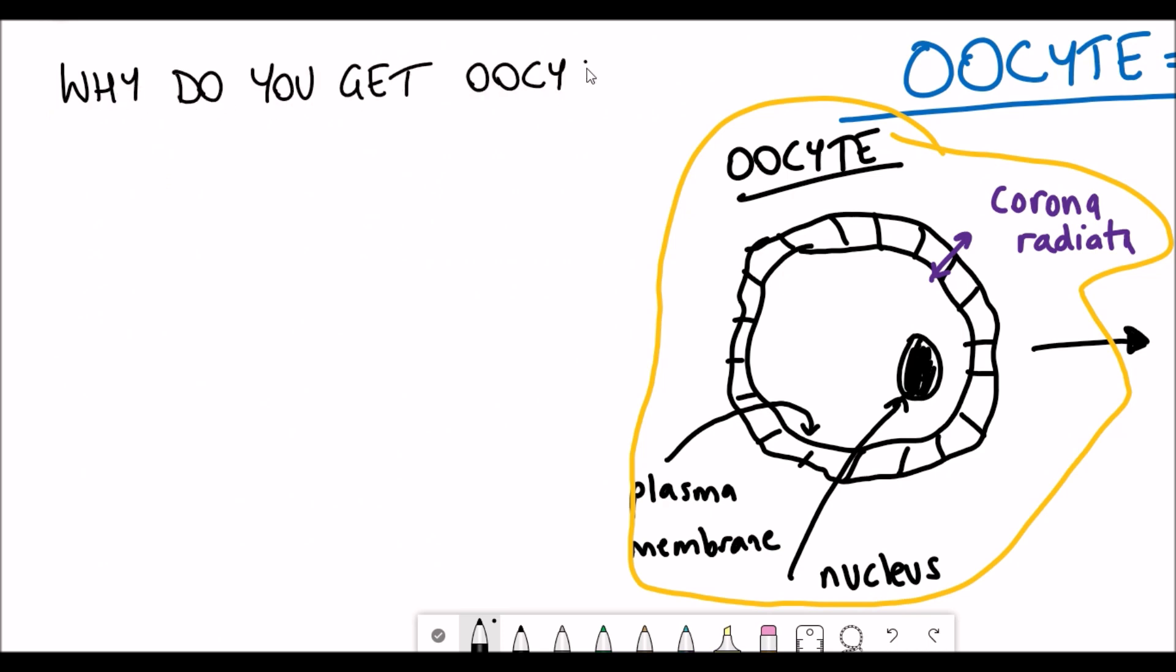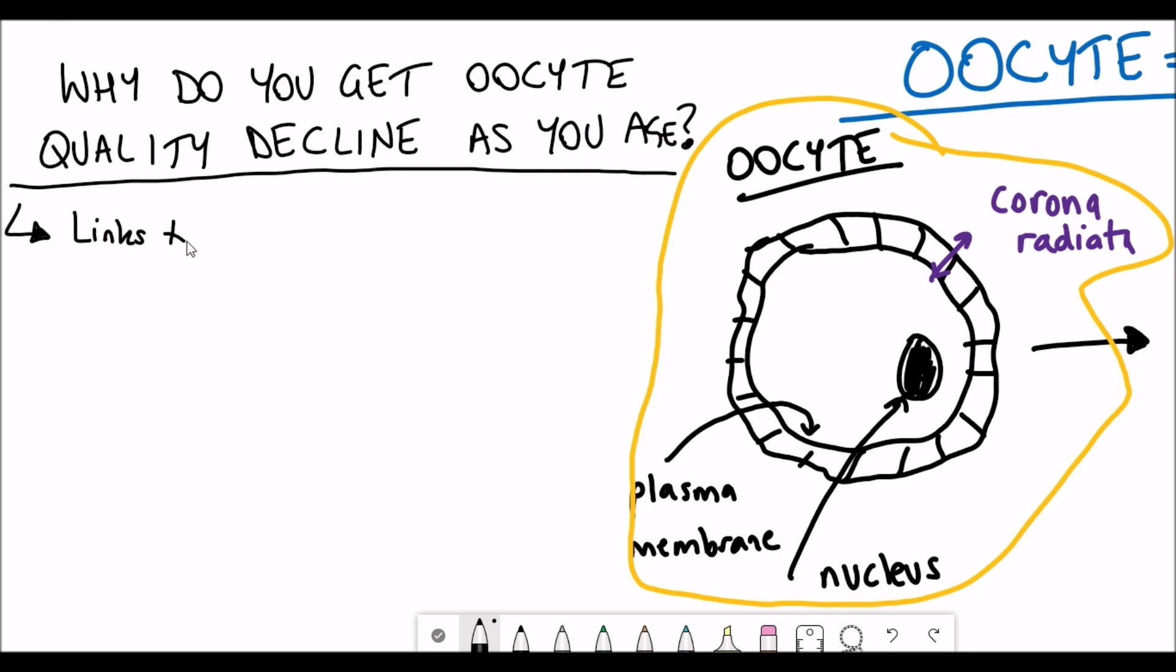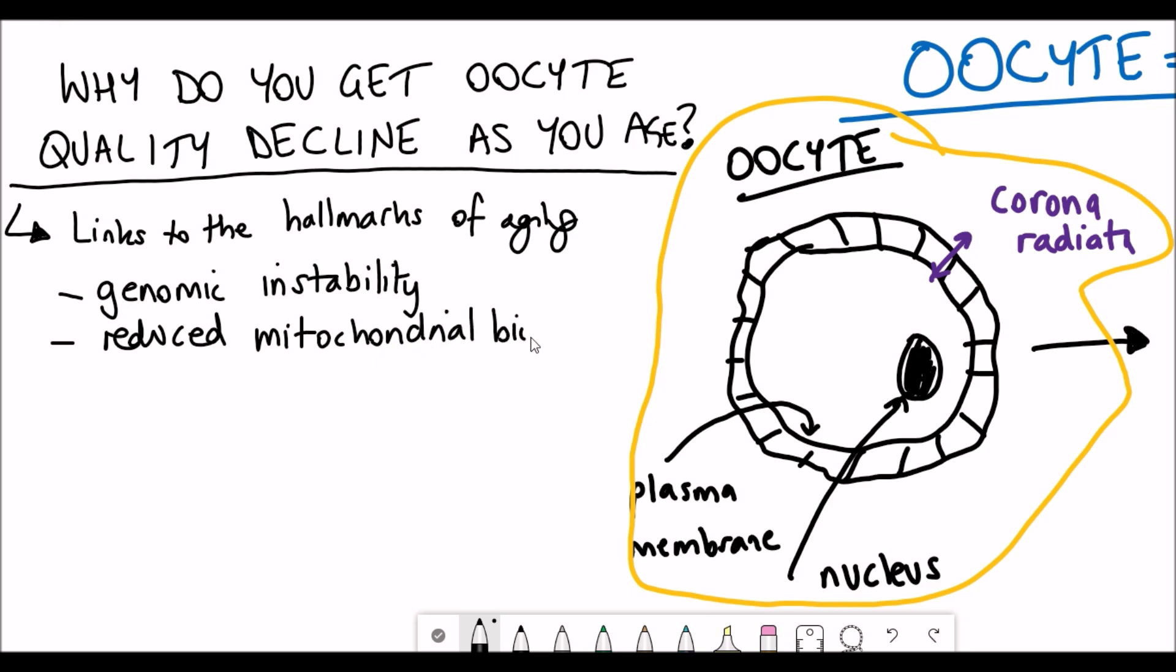Why does the quality decrease? Many of the phenotypes are associated with different hallmarks of aging. Older oocytes show genomic instability, reduced mitochondrial bioenergetics, and also show compromised cell division, which is really important for early embryonic development.